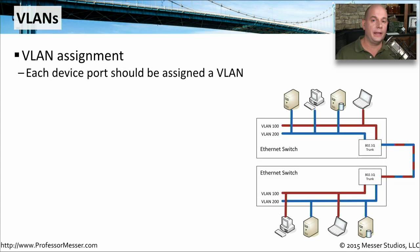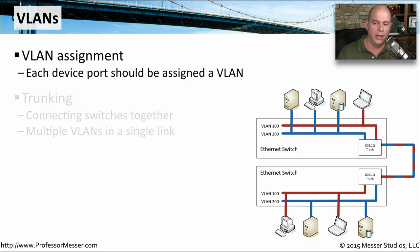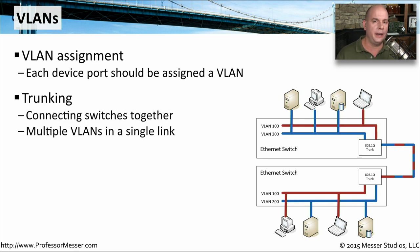For VLAN configuration, we'll want to define what every interface's VLAN should be. Some may be on the default VLAN for that particular switch, or we may need to configure specific VLANs depending on where people are connecting. You may also have trunk connections between switches, so you may have to configure certain interfaces to work as a trunk and connect multiple switches together.